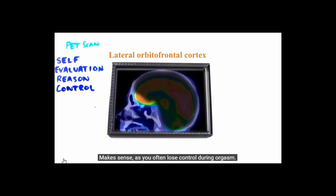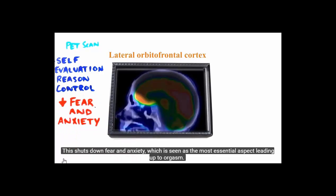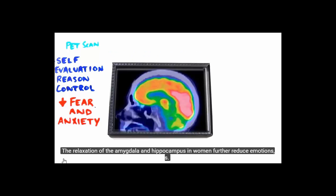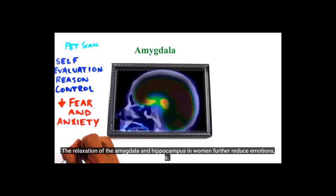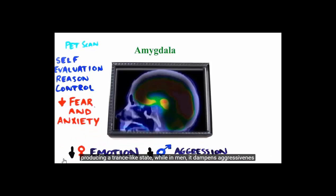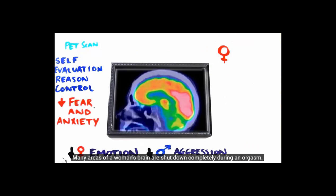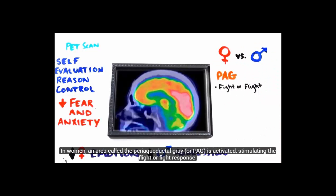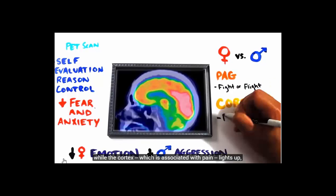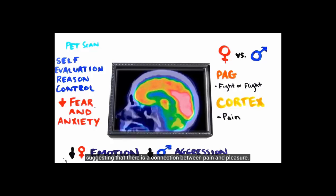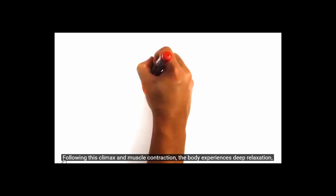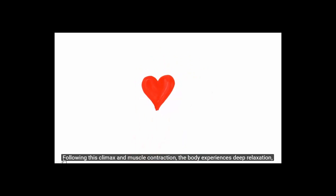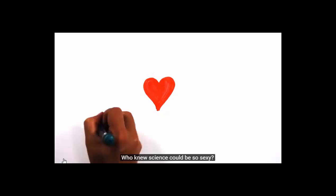In both genders, the lateral orbital frontal cortex is turned off, which controls self-evaluation, reasoning, and control — which makes sense, as you often lose control during orgasm. This shuts down fear and anxiety, which is seen as the most essential aspect leading up to orgasm. The relaxation of the amygdala and hippocampus in women further reduces emotions, producing a trance-like state, while in men it dampens aggressiveness. In women, the periaqueductal gray (PAG) is activated, stimulating the fight-or-flight response, while the cortex associated with pain lights up, suggesting a connection between pain and pleasure. Following climax, the body experiences deep relaxation and heart rate slows.